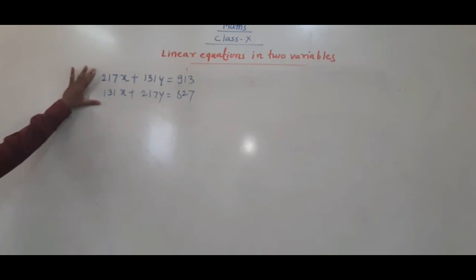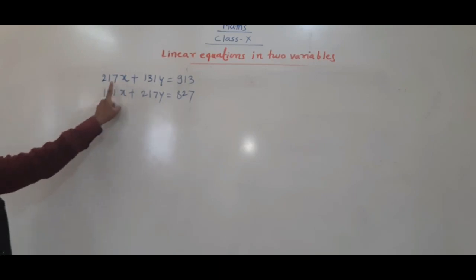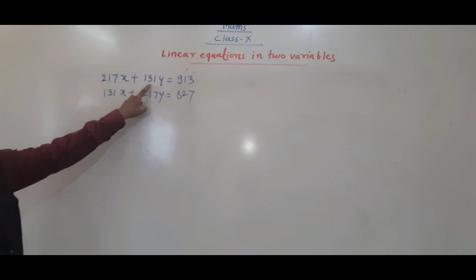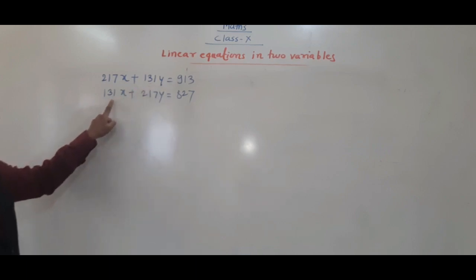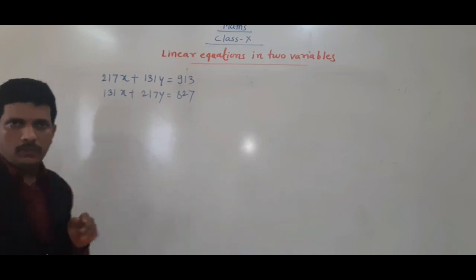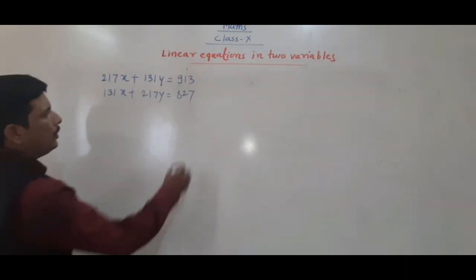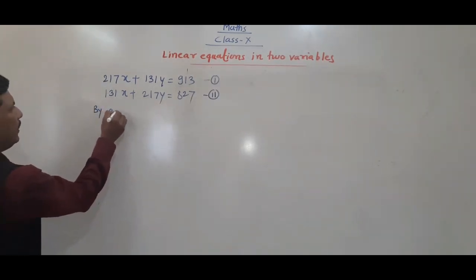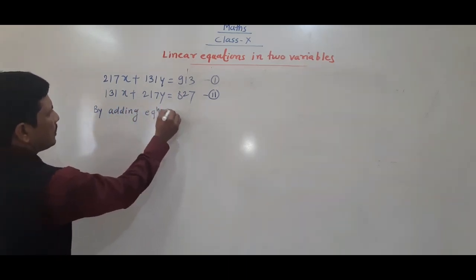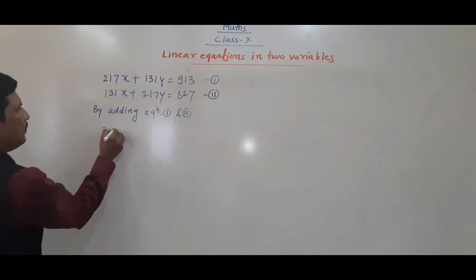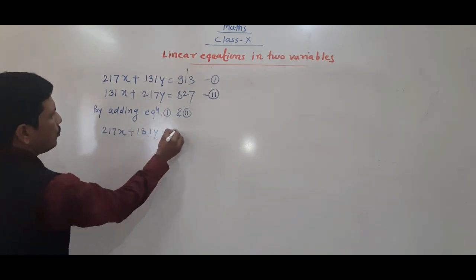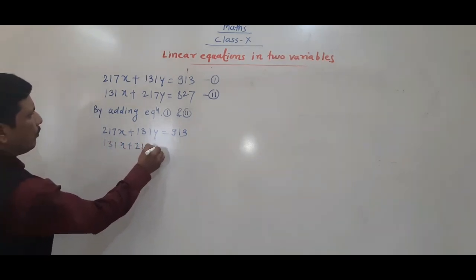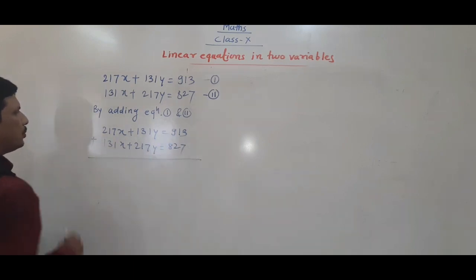If you observe here, the coefficient of x (270) in the second equation equals the coefficient of y in the first equation, and the coefficient of y (131) in the first equation equals the coefficient of x in the second. This is the same type as before. We will add equation 1 and 2: 217x + 131y = 930 plus 131x + 217y = 827.